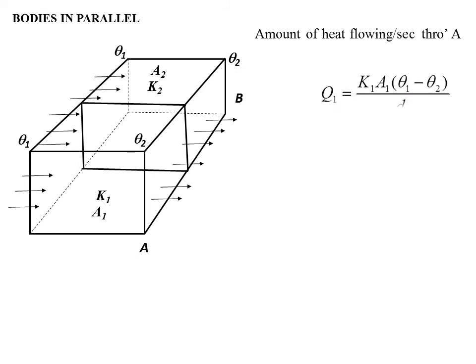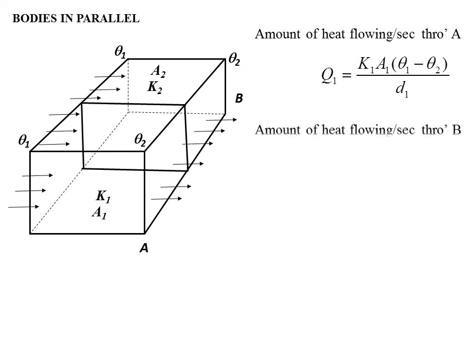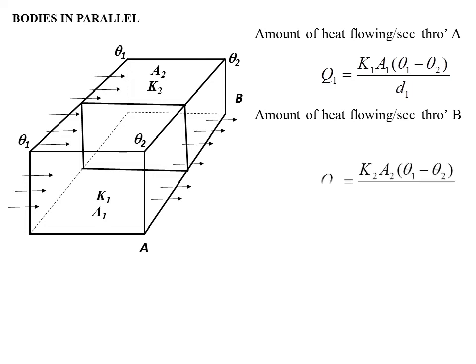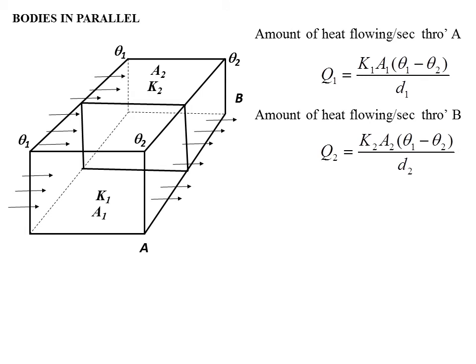When slabs are connected in parallel, the amount of heat conducted through A equals K1·A1 times (theta 1 minus theta 2) divided by D1, because here the temperature difference is the same across both. The amount of heat flowing through B equals K2·A2, where the area of cross-section is also different, times (theta 1 minus theta 2) divided by D2.